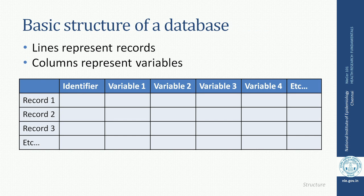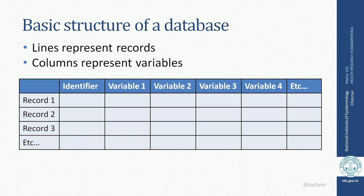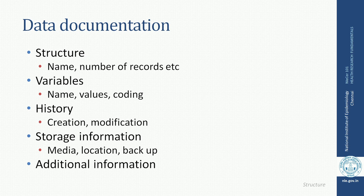What is data structure? For some of you who may be new to the word database, this is an example of a database. Each of these horizontal lines represents records pertaining to one particular individual. Each of these columns represents variables — the information that is collected on certain variables based on the study question. We need to initially formulate the entire plan of how the data is going to be managed, which can come in the form of data documentation. It can talk about the structure, meaning the name, number of records, and other relevant information.